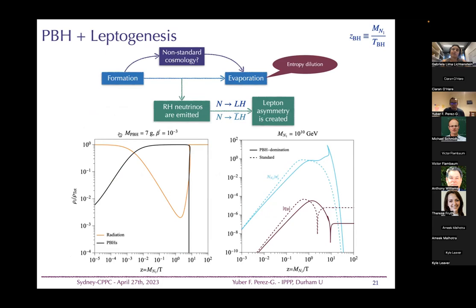We use a set of Boltzmann equations describing both thermal-plasma-sourced and black-hole-sourced leptogenesis. For example, for a black hole mass of 10^7 grams and initial fraction of 10^-3, comparing only thermal leptogenesis (dashed lines) with the case including black hole evaporation producing right-handed neutrinos of a given mass, we see a significant change in the right-handed neutrino abundance.